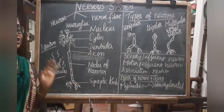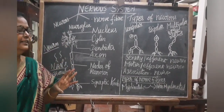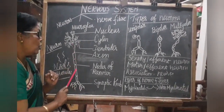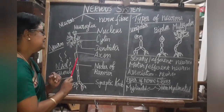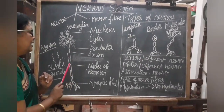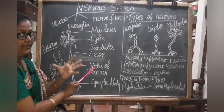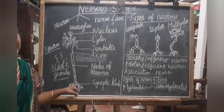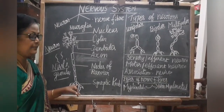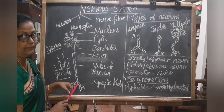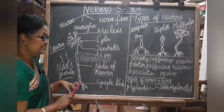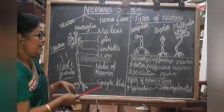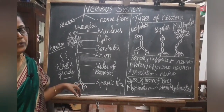The dendrites are branched processes that conduct nerve impulses toward the cell body. The axon is the long process covered by a myelin sheath, and has gaps called nodes of Ranvier. At the terminal end, there is a synaptic knob or synapse, which transmits messages or nerve impulses from one neuron to the next using chemicals called neurotransmitters.